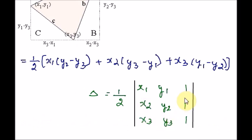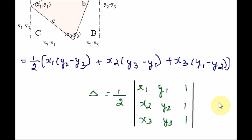This is how it has been written in determinant form. Here we have some points to be noted. Since the area is a positive quantity, we always take the absolute value of the determinant — let this be equation number one. If the area is given, use both positive and negative values of the determinant for calculation. And the third important point is: the area of the triangle formed by three collinear points is zero.